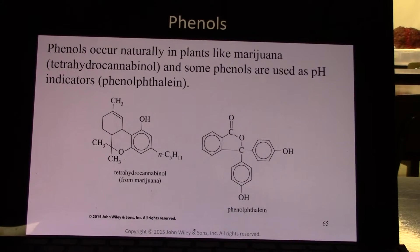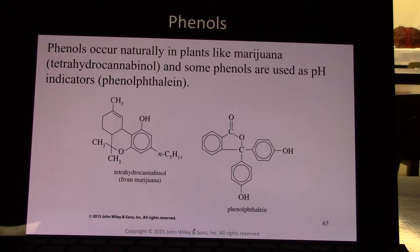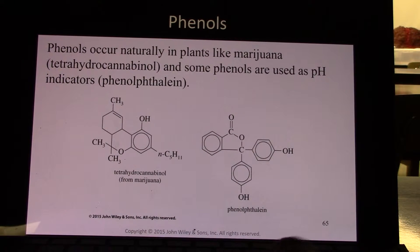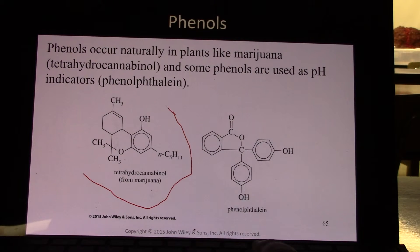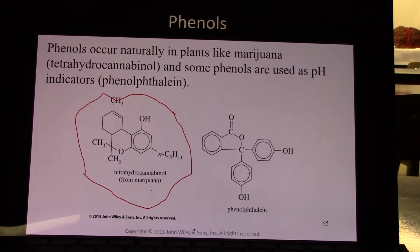Phenols occur naturally in plants like marijuana — tetrahydrocannabinol. Some phenols are used as pH indicators, like phenolphthalein. Molecules like these can be psychoactive, which is why marijuana has pharmacological effects on a person. In some states it has been legalized as a pharmaceutical.